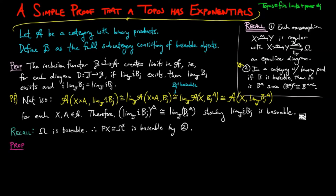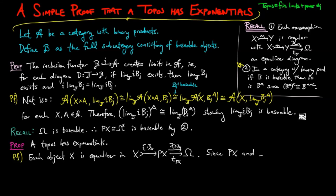It is now easy to prove that a topos has exponentials. Each object x in a topos is an equalizer, since the singleton monomorphism is a regular monomorphism by the observation 1 above. Then since Px and omega are baseable and equalizers are a type of limit, by the result we just proved, x must also be baseable. Thus, a topos has exponentials, since every object in the topos is baseable.